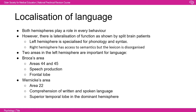When discussing language lateralization, Broca's area and Wernicke's area are essential. Both are in the left hemisphere. Broca's area (areas 44 and 45, frontal lobe) enables speech production, whereas Wernicke's area (area 22, superior temporal lobe in the dominant hemisphere) is vital for comprehension of written and spoken language. We'll discuss the aphasias that result from lesions to these areas when covering disorders and pathology.